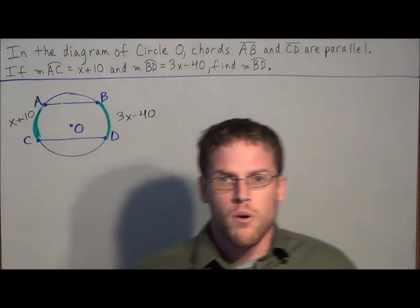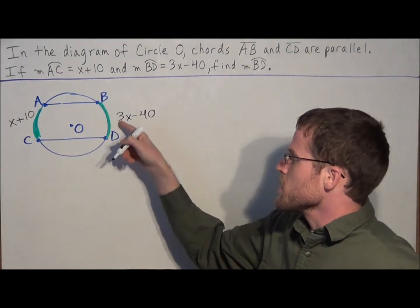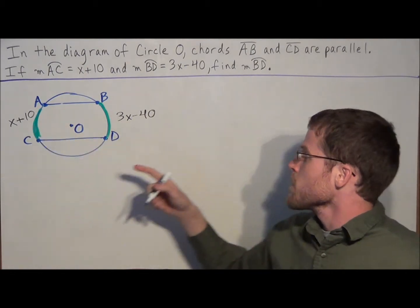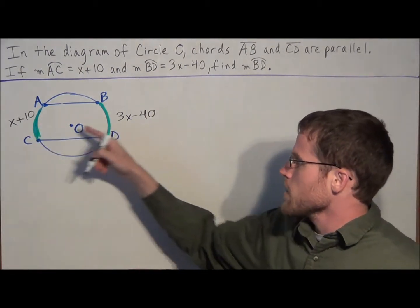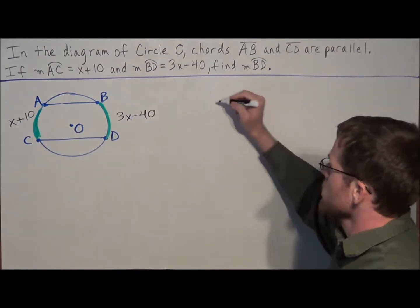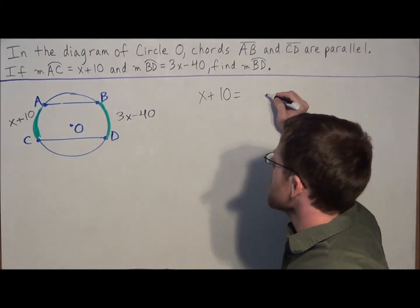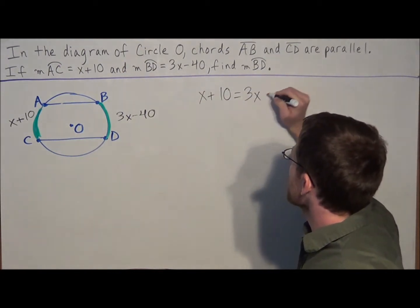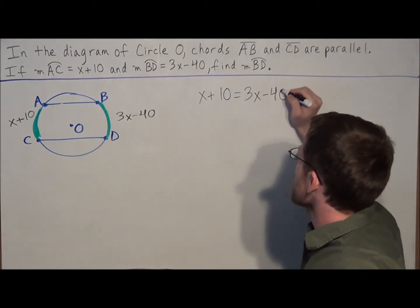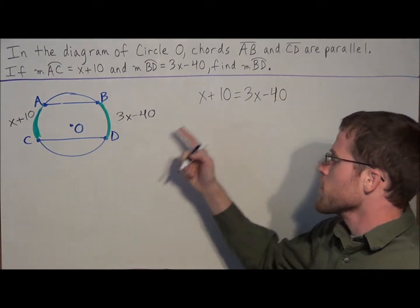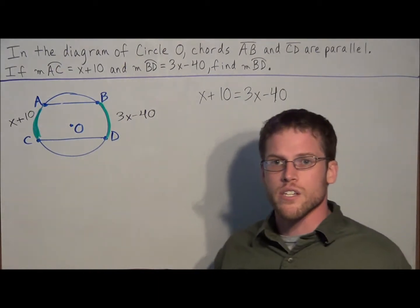So as I just stated a few moments ago, we know that the measure of these arcs are congruent. So we could set these two algebraic expressions equal to each other. So we know that x plus 10 is equal to 3x minus 40. Once again, we're just using our theorem to set these two expressions equal to each other.